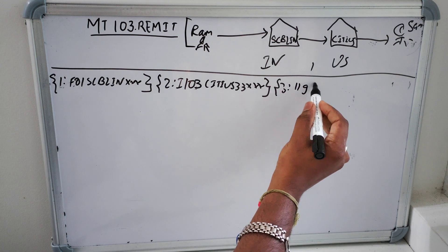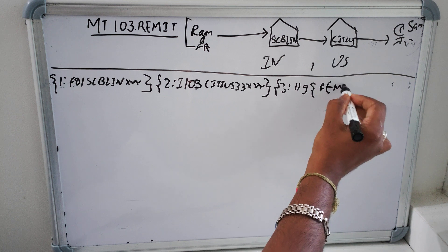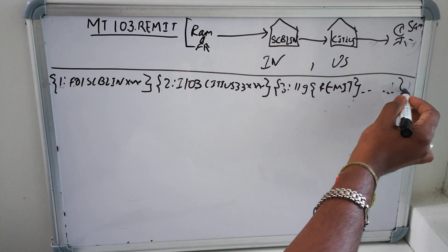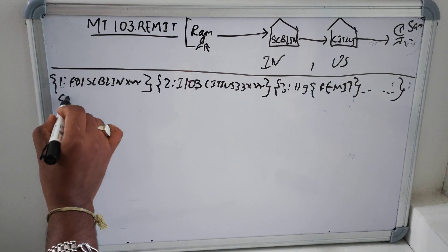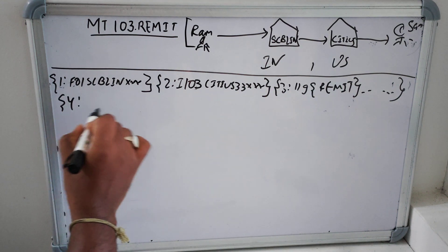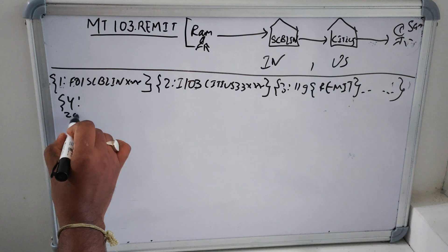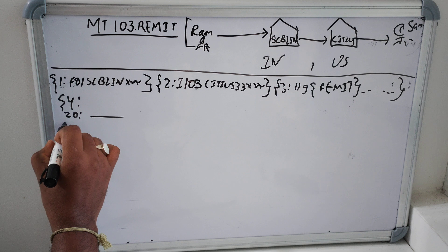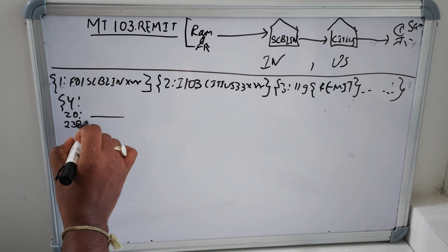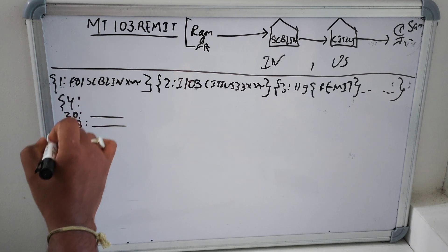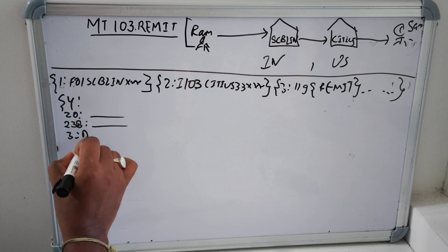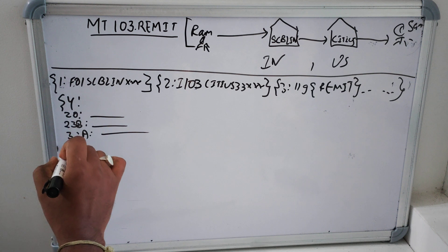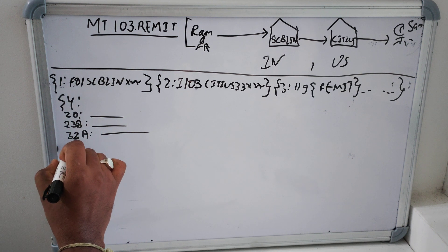Block 3: 119 here we have to use remittance and followed by some other stuff. Block 4: we will have tag 20 transaction reference number, 23B bank operation code, 32A we know that it is value date currency and amount, intervention settlement amount.